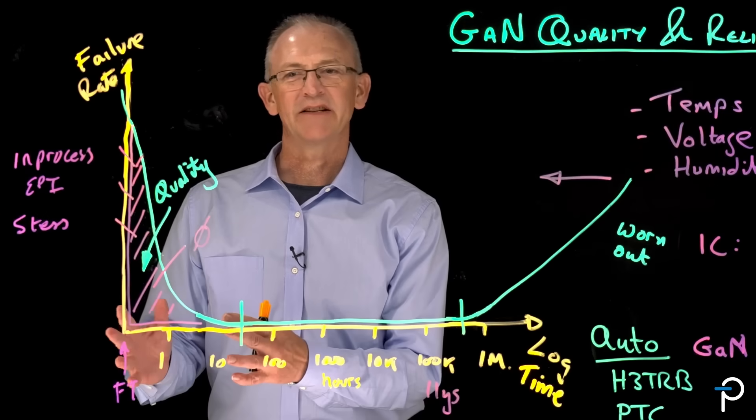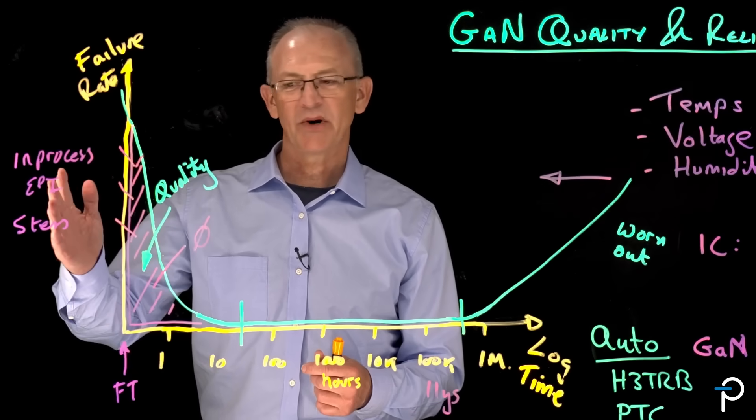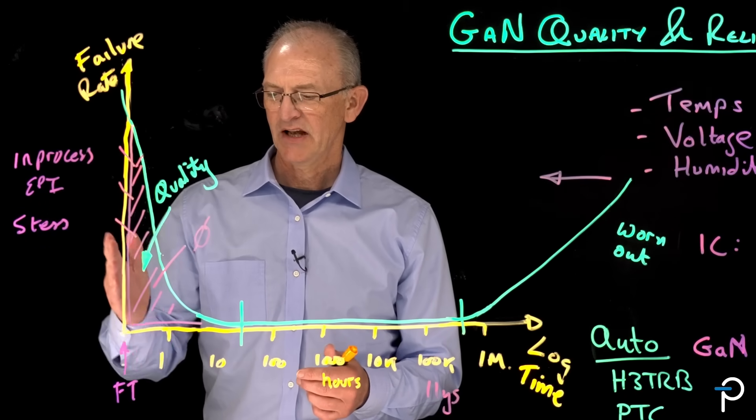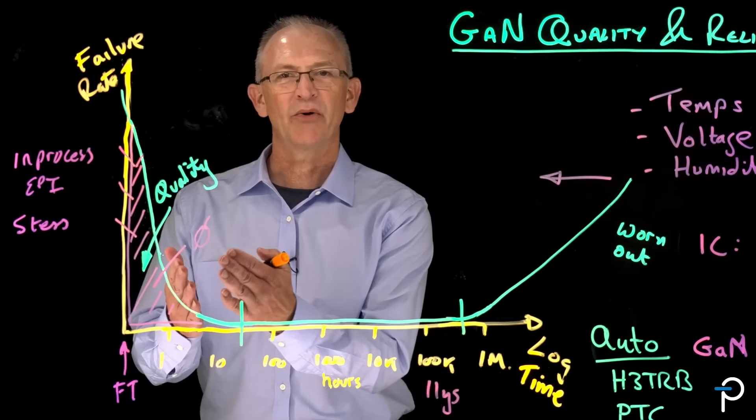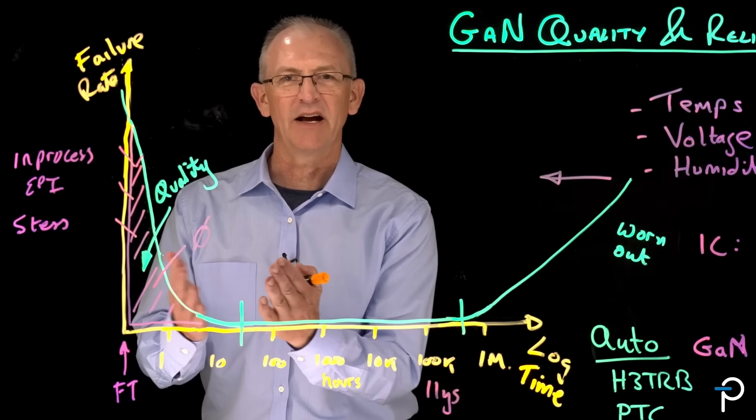So how do we validate that our in-process monitors and our yield improvements and our final test regime are going to yield a perfect product stream out of the other side?